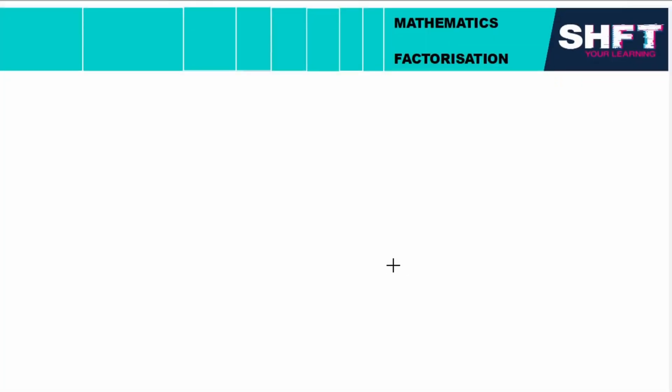Today we are going to be starting probably one of my personal favorite parts of mathematics, and it's called factorization. It really goes hand in hand with all the algebra we've been doing up until now, all the simplification. 3x + 15, how do I rewrite this as something multiplied by something? How do I factorize this expression?